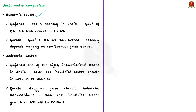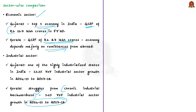In the economic sector, Gujarat is a top-five economy in India with a gross state domestic product of 16.7 lakh crores in FY2020, compared to Kerala's GSDP of only 8.7 lakh crores. Kerala's economy heavily depends on remittances from abroad, especially from the Gulf region. Gujarat is one of the highly industrialized and investor-friendly states. Kerala's economy struggles with chronic industrial backwardness — data from 2014-15 to 2017-18 shows Kerala's industrial sector grew only 5.6 percent year-on-year, while Gujarat grew at 13.3 percent.